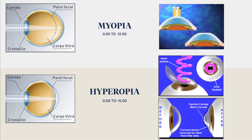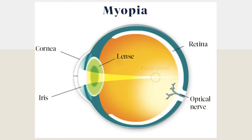The procedure consists of using a laser to reshape the curve of the cornea. For nearsightedness — myopia — the goal is to flatten the roundness of the cornea, so the laser pulverizes primarily the layers at the summit of the cornea and does less pulverizing around the edge.